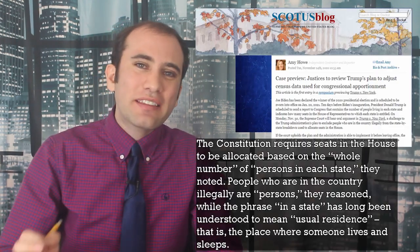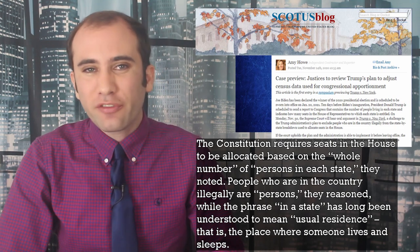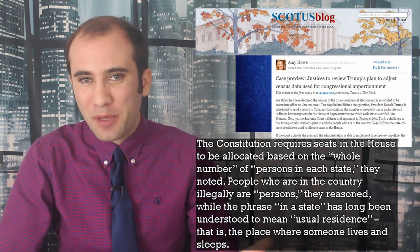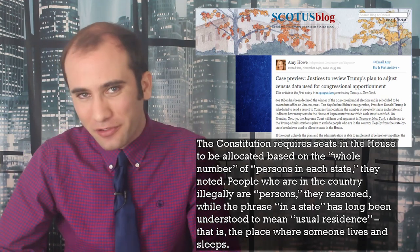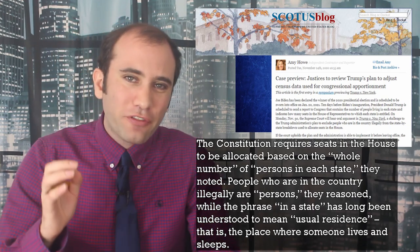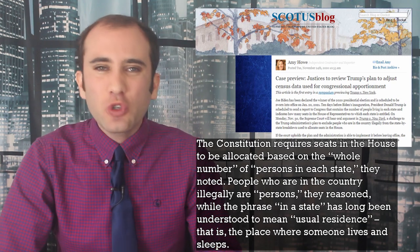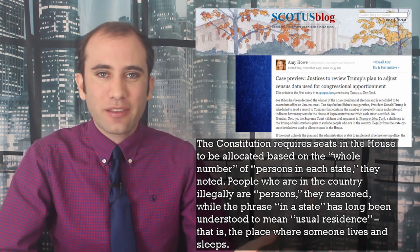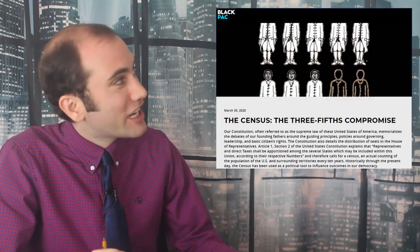The progressives are not big fans of this new definition and are arguing — originalism? Founders and progressives: that is a team-up I did not see coming. The Constitution requires seats in the House to be allocated based on the whole number of persons in each state. People who are in the country illegally are still persons — not much of a stretch there. The phrase 'in a state' has long been understood to mean usual residence — the place where someone lives and sleeps. If the framers wanted to exclude a group from the census, they would have specified, sometimes to a detriment.